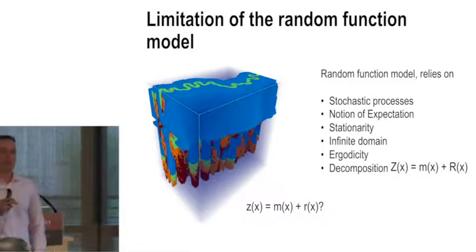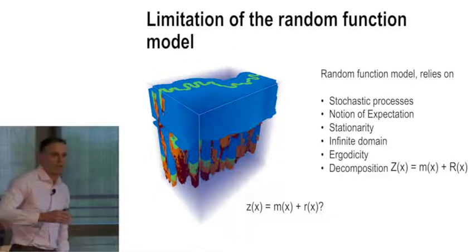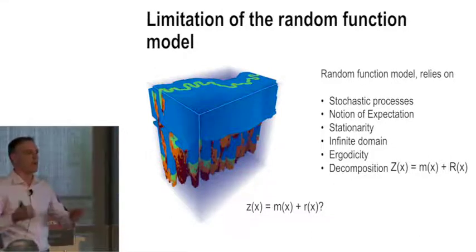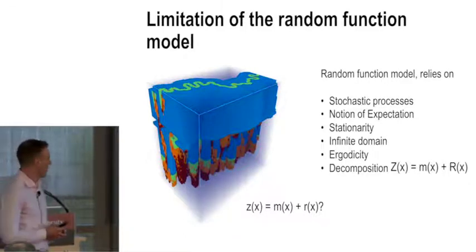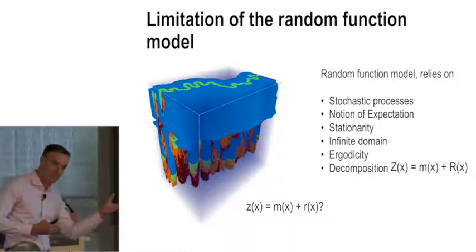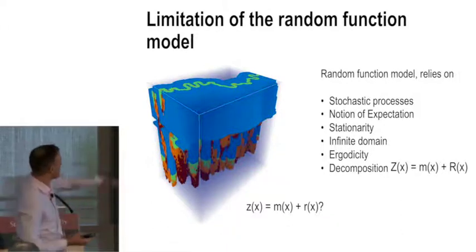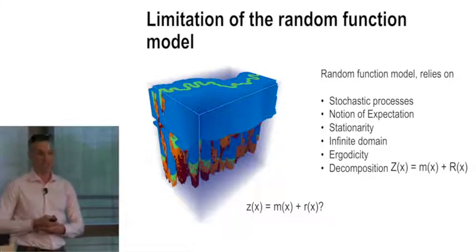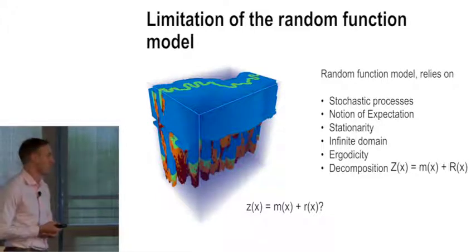So in geostatistics, people have worked a lot theoretically with what is called the random function model. It's a part of probability theory where you need to rely on a lot of difficult concepts such as stationarity or ergodicity, infinite domain, in order to formulate and say really that the truth is a realization of a stochastic process. In the end, we often say that this realization is sometimes decomposed into two problems: a mean problem, some kind of average that is fluctuating up and down, and a variation around that mean. So if I show you this picture on the left, which is a physical simulation of geology, and you ask geologists now to say what is the mean and what is the residual, obviously we are entering a problem here. We can't really apply this.